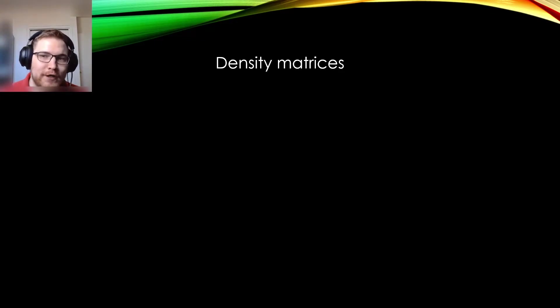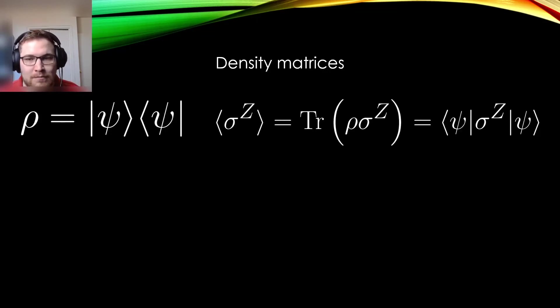We've made it this far. We're finally ready to introduce density matrices. So going from a pure state represented by a ket, we can introduce the density matrix, which is a completely equivalent way to represent the state of a quantum system. The density matrix in this context is just the outer product of the state with itself. The expectation value is rewritten in terms of a trace, but it is mathematically equivalent to our earlier expression.